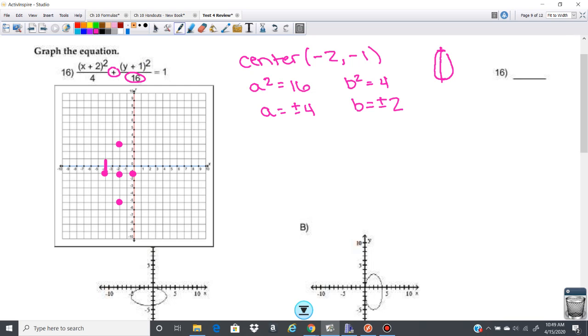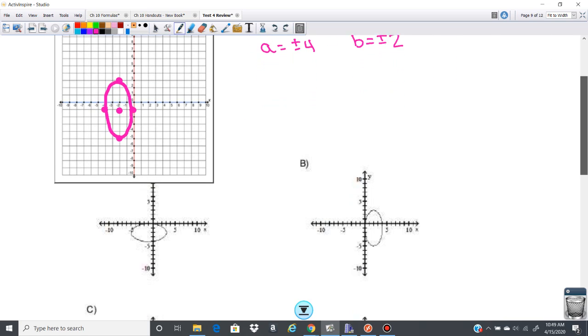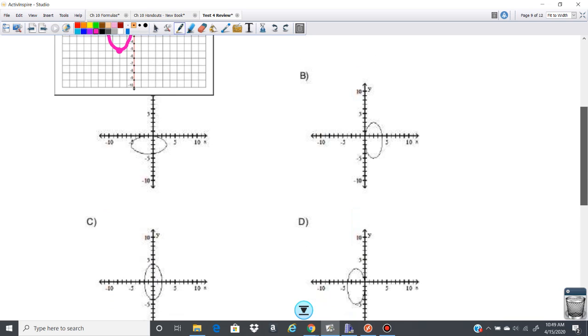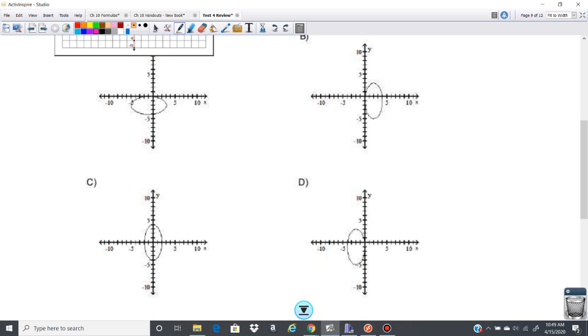And then if I go ahead and try and connect these dots, we're going to look something like this. So then if we look here, this should match ellipse D. That's the only one that actually has the correct center, so it should match right there.